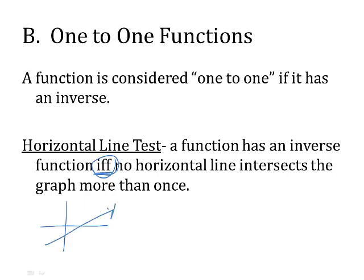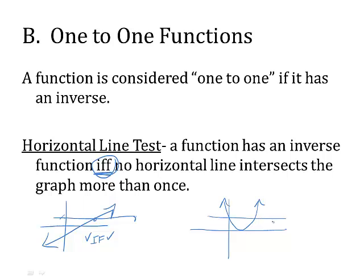A function has an inverse function if and only if no horizontal line intersects the graph more than once. For instance, if I have a line, a horizontal line through it only hits in one place — this means it has an inverse function. A parabola, however, is a function, but a horizontal line hits it in two places, so an inverse function does not exist.